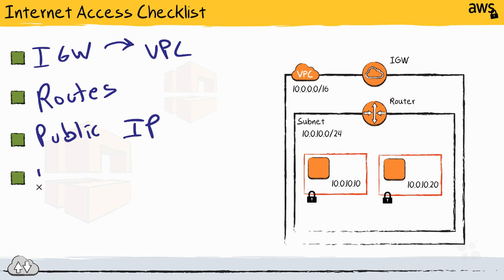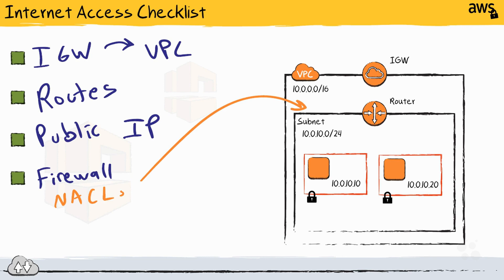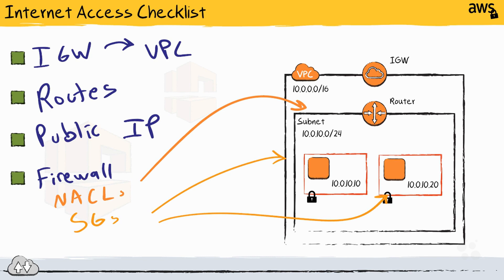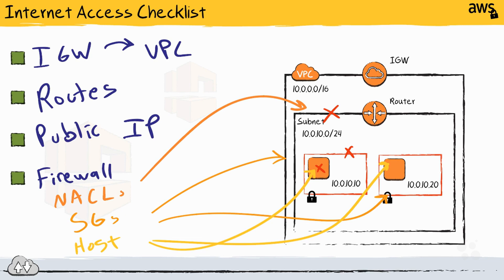That brings us to the final item on the checklist: what do the firewall rules look like? There are many different levels of firewalling happening here. The first layer is network access control lists — NACLs live at the subnet level and have the ability to both allow and block traffic very granularly. Next, you have security groups, which live at the network interface or EC2 instance level. Security groups can granularly allow traffic, but they don't have the deny rule that NACLs possess. Last but not least, we have host-level firewalls running inside the EC2 instance itself — such as Linux iptables, Windows Firewall, or other third-party filtering software. Each of these checkpoints has the ability to potentially block or restrict internet access.